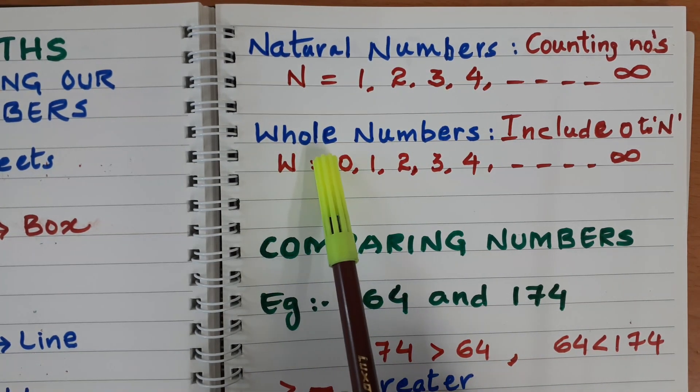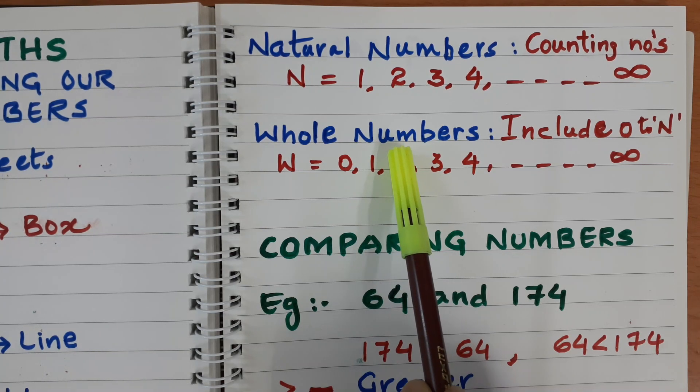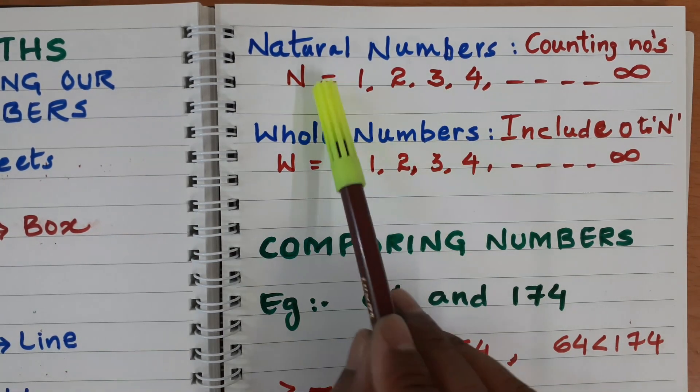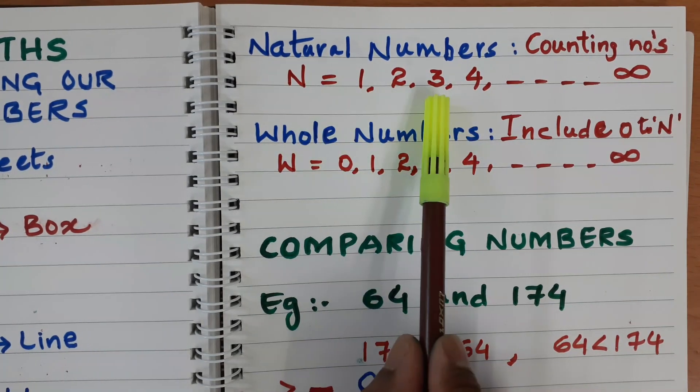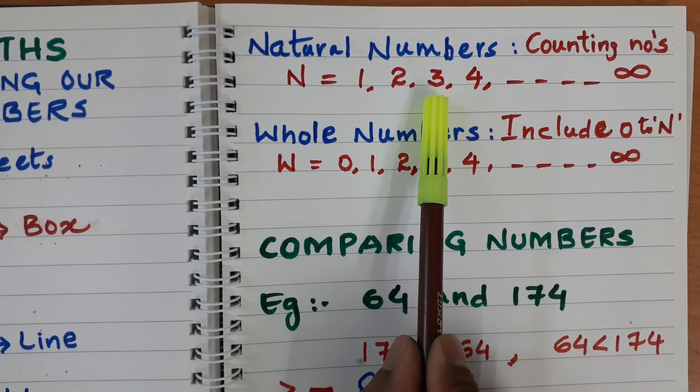Next type is whole numbers. If we include 0 to natural number, if you are including just 0 here to the natural number, then we get whole numbers.